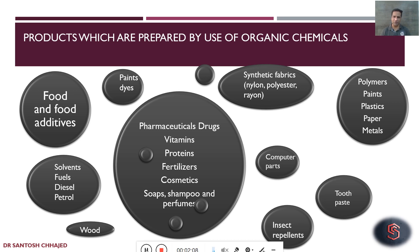Different fuels what we are using like diesel, petrol, they are nothing but chemicals. And different polymers what we see around us, what we use like paints, plastic, even papers, metals — they are nothing but chemicals. Different fabrics like synthetic fabrics, nylon, polyester, rayon — they all are nothing but chemicals.